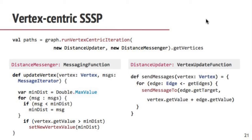Here is single source shortest paths as an example. The API in Gelly looks like this: you have a graph, call run vertex-centric iteration, and define the two UDFs — distance updater and distance messenger. The distance updater says: from all my edges, get my current value and the edge value, create a message, and send it to all my neighbors. The distance messenger says: if the message I received is lower than my current distance, update my value.